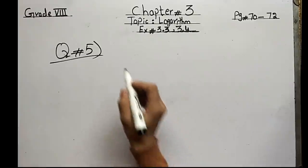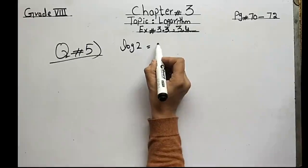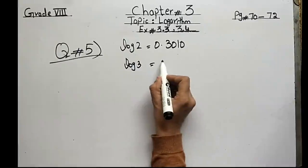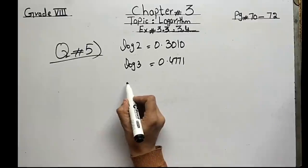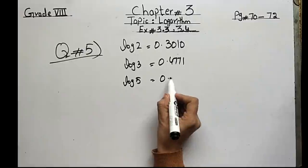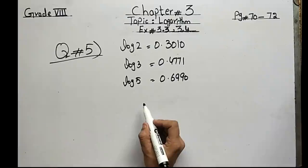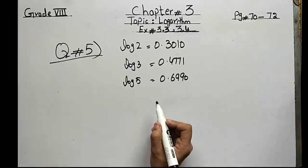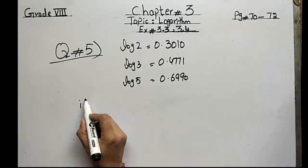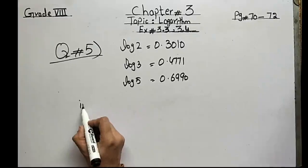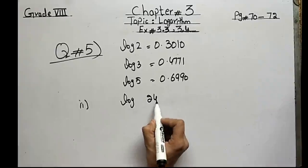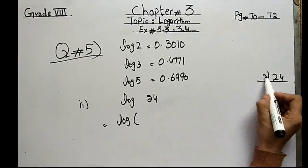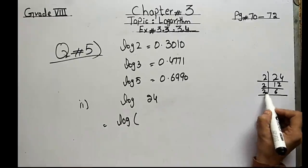Question number 5: given that log(2) = 0.3010, log(3) = 0.4771, and log(5) = 0.6990. Find the log of 32, log(24), log(∛3⅓), log(8/3), and log(30). I will do the second part, log(24). Find the factors of 24: 24 = 2³ × 3.